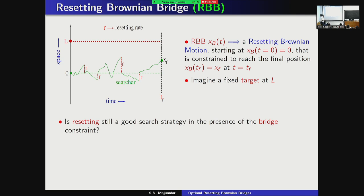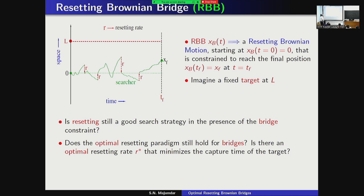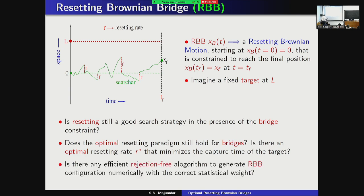More precisely, the model is resetting Brownian motion starting at zero, conditioned to reach a fixed final position xf at fixed final time tf. We look at all resetting Brownian motion configurations that arrive at xf at time tf. Given a target at L, we ask three questions: Is resetting still a good strategy under the bridge constraint, since the mean first passage time is already finite without resetting? If so, is there still an optimal r* minimizing the capture time? And third, how do we numerically generate such bridge paths in a rejection-free way, since naively keeping only configurations that reach xf at tf would be very costly?